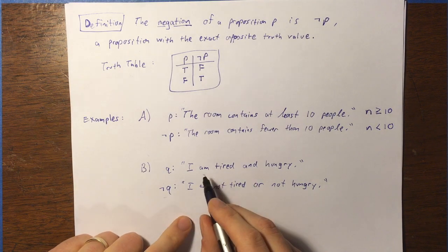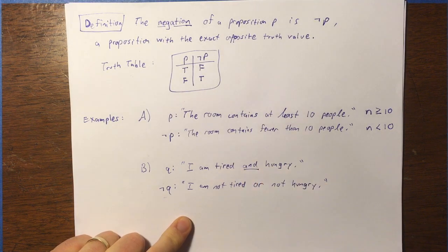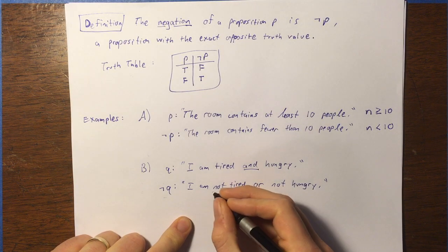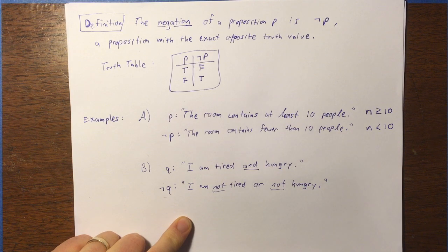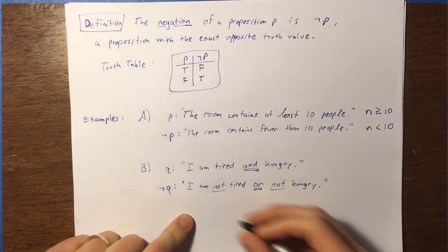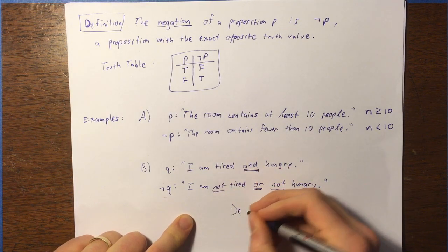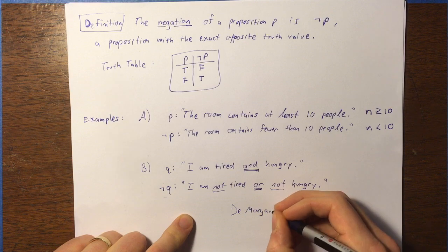So, by the way, this, the fact that the initial proposition had an and, and the resulting negation includes the word not twice, but also involves the word or, that is actually an example of something called De Morgan's Law, which we're going to go over in much more detail soon.